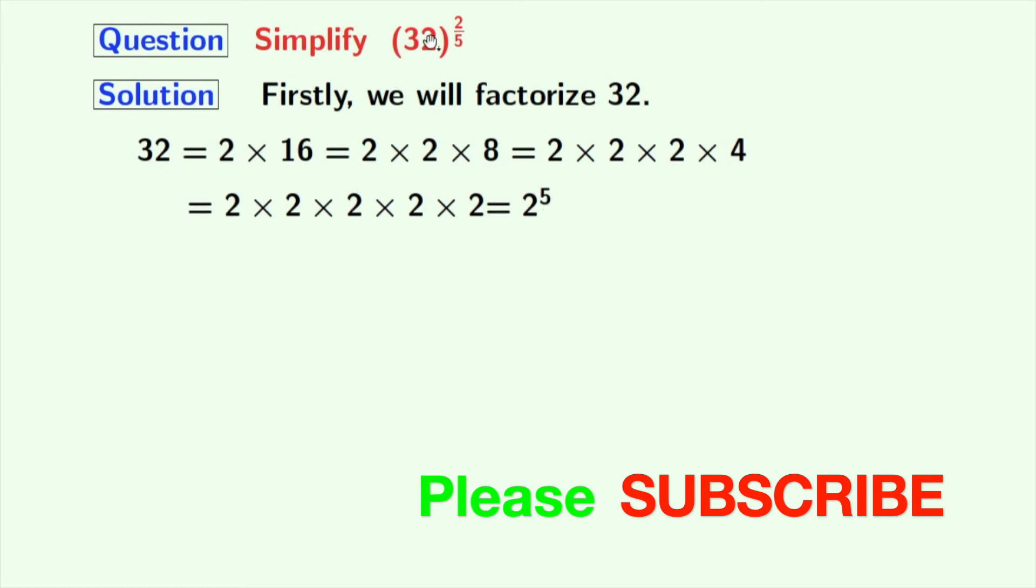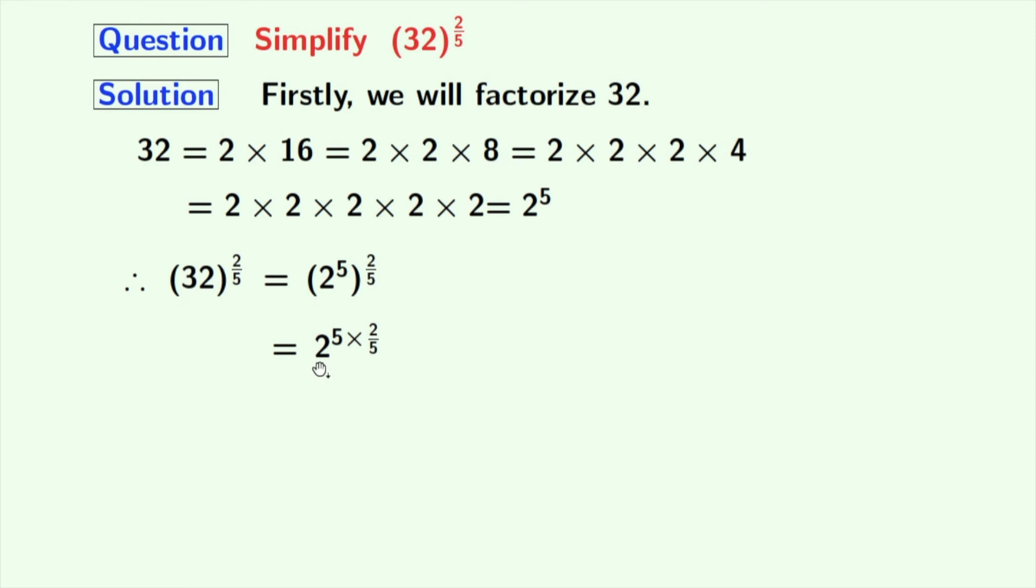Using this fact, the given expression, 32 to the power of 2/5, can be written as (2 to the power of 5) to the power of 2/5. Now, we will rewrite this as 2 to the power of 5 times 2/5.